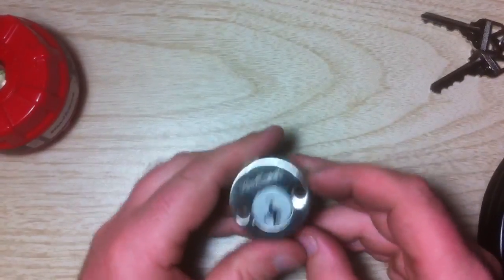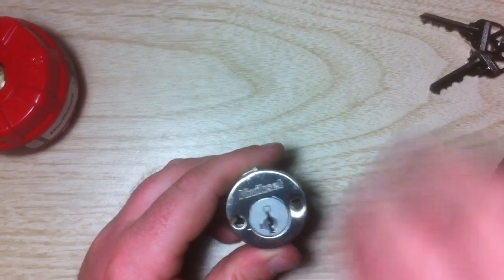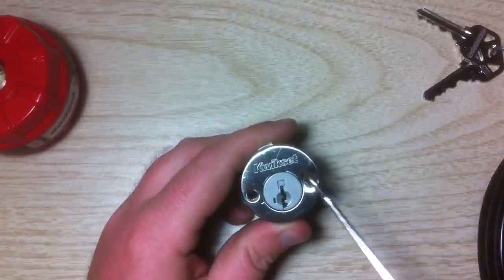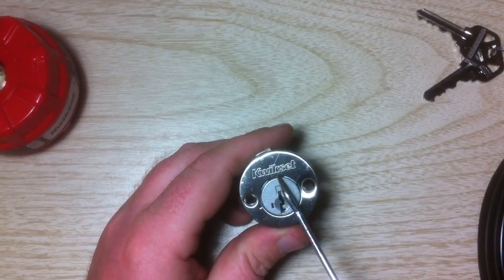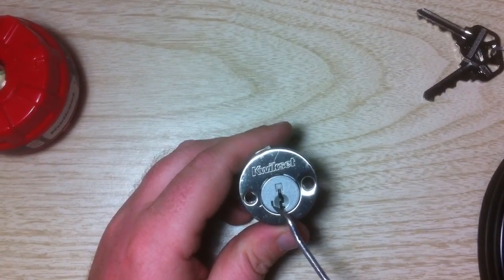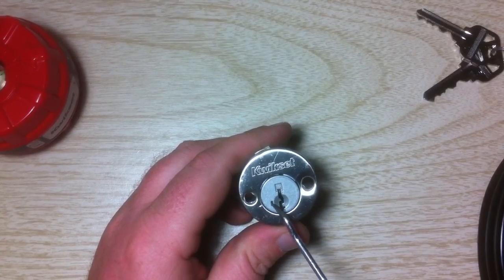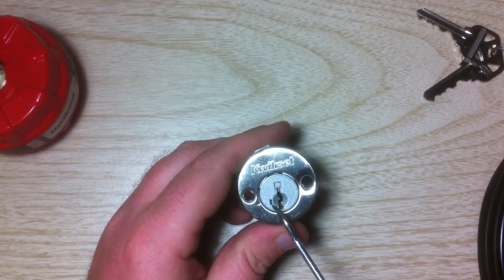Okay, today I'm going to make a quick video on how to reset a Kwikset smart key. This particular lock is a deadbolt, and you can notice the Kwikset brand there. You can indicate the smart key feature by the little line directly to the left of the keyway.